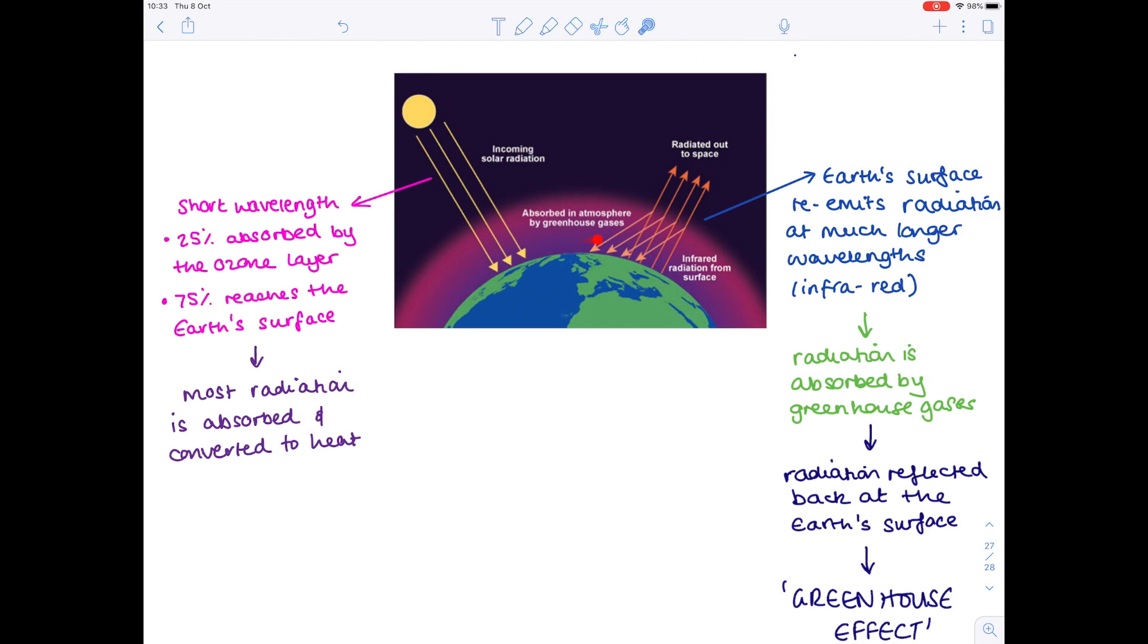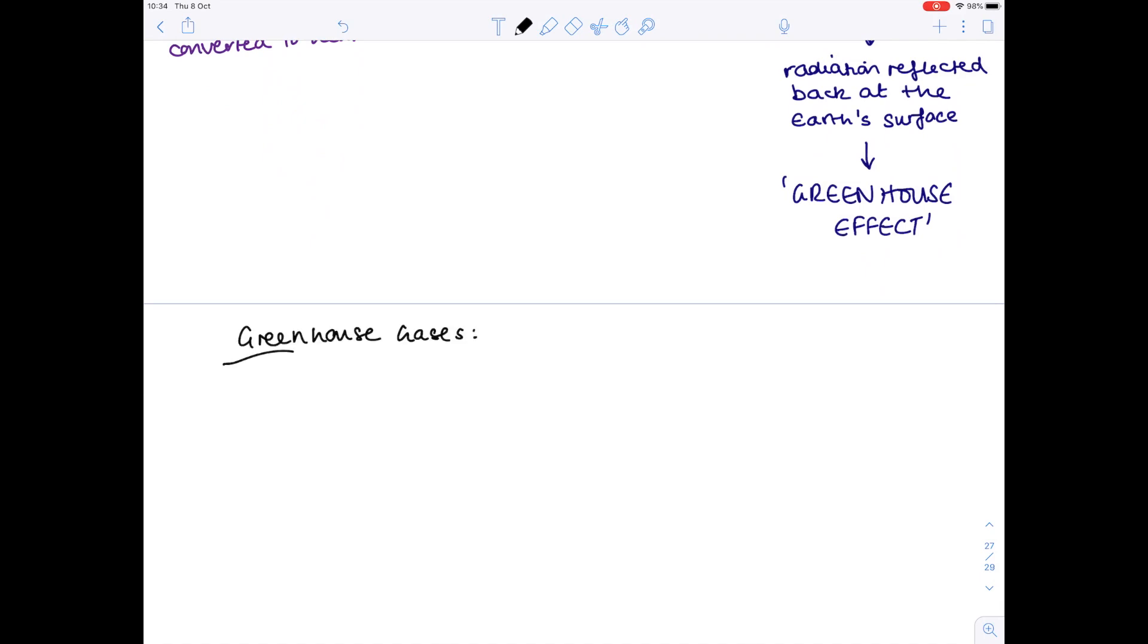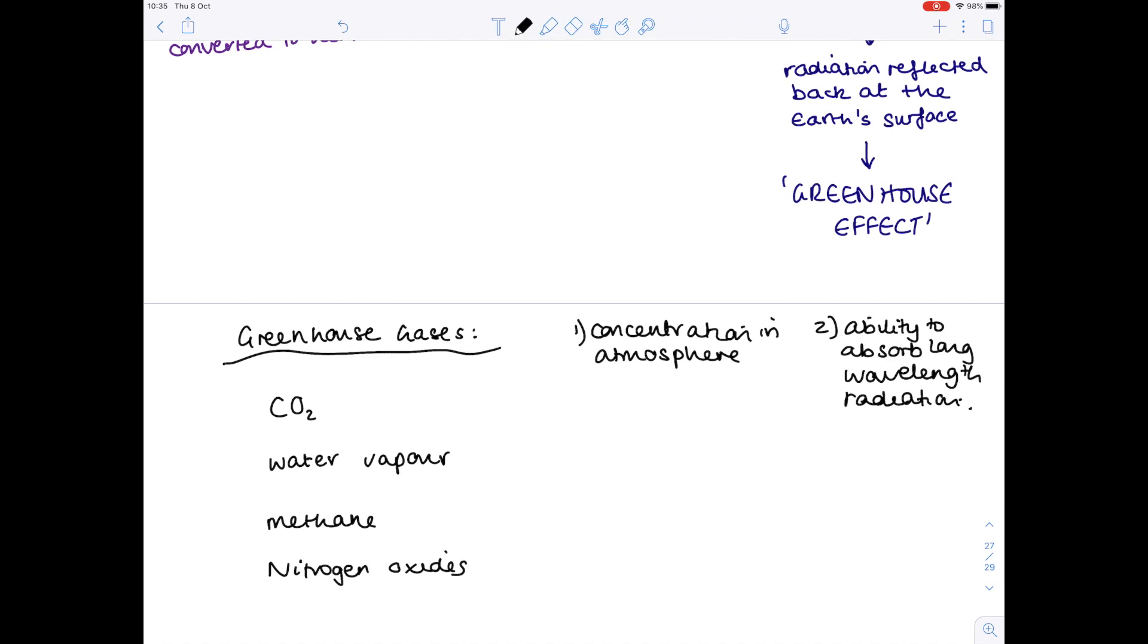So what gases are responsible for producing this greenhouse effect? Well they're known as greenhouse gases. The main one is carbon dioxide. You've also got water vapour, methane, and nitrogen oxides. Now in terms of how much of a warming effect these gases have depends on two things: number one, their concentration within the atmosphere, and number two, their ability to absorb long wavelength radiation. Notice that methane has a great ability to absorb long wavelength radiation but is in low concentrations. CO2 however has in comparison a poor ability to absorb long wavelength radiation but it has a very high concentration in the Earth's atmosphere. And therefore carbon dioxide has a much larger greenhouse effect. So just to highlight, carbon dioxide and water vapour actually have the strongest effect, and then methane and nitrogen oxides have less of an effect.